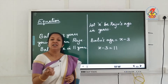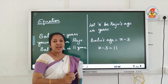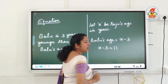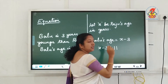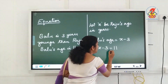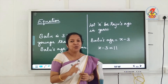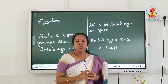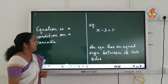An equation is actually a condition on a variable. The condition here is X minus 3 is equal to 11. This is known as the LHS (left-hand side) and this is the RHS (right-hand side). These two should be separated by an equal sign. If there is an equal sign, only then can we call it an equation.